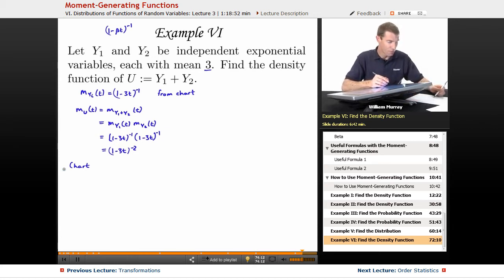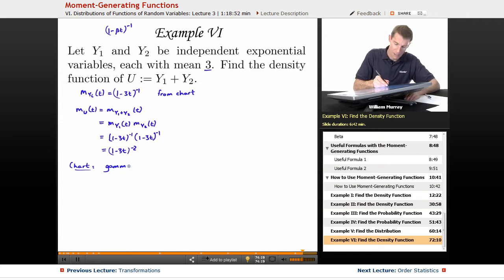The gamma distribution does have a moment generating function of 1 minus beta t to the negative alpha. So what I have here is a gamma distribution with alpha is 2 and beta is 3.